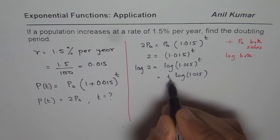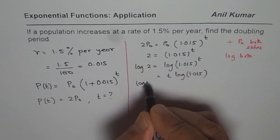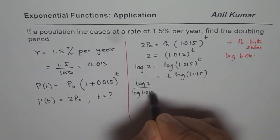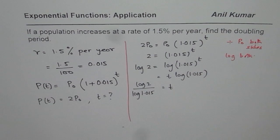And now we can find what t is. That will be the ratio of log 2 over log of 1.015. And that is the value of t we are looking for.